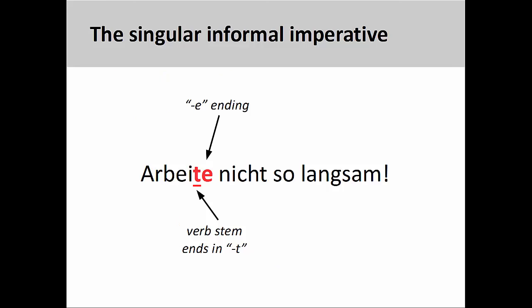In a prior presentation, we saw that the singular informal imperative had some difficult rules to remember. For example, if a verb stem ends in D, T, or IG, we must add an E to the imperative form. Arbeite nicht so langsam. Don't work so slowly.